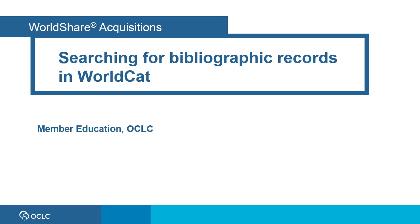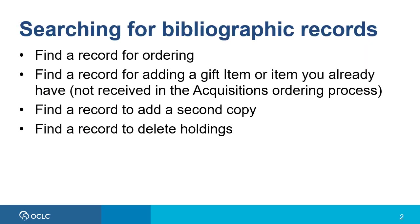Searching WorldCat indexes can also help you determine which MARC fields and subfields are included in the available indexes. In WorldShare Acquisitions, you'll need to search for a bibliographic record to find a record for ordering, to find a record to add holdings for a gift, or an item you have in a backlog or that was not acquired in the WMS Acquisitions ordering process. You may also want to search for a record to add a second copy, or to delete holdings for an item you no longer have.